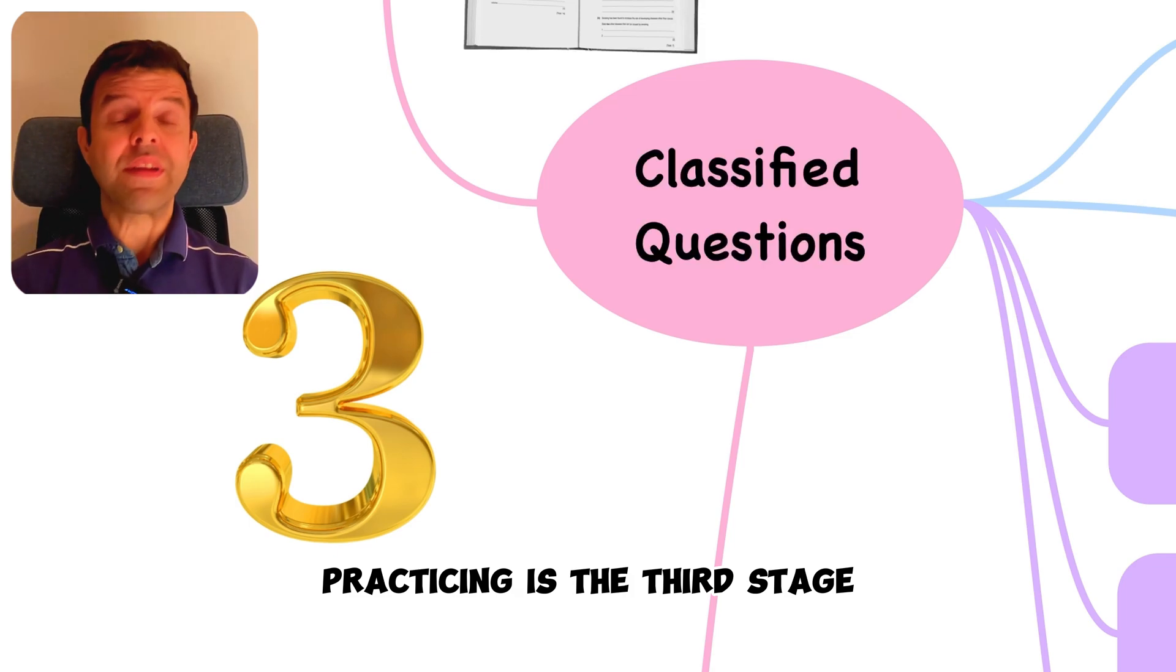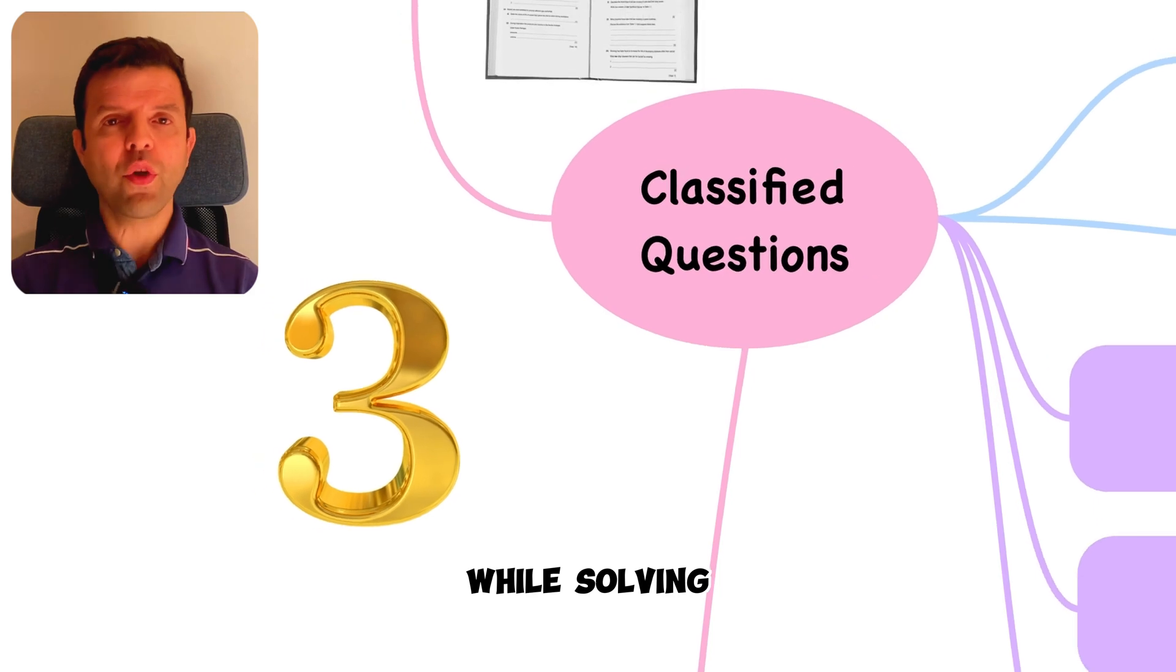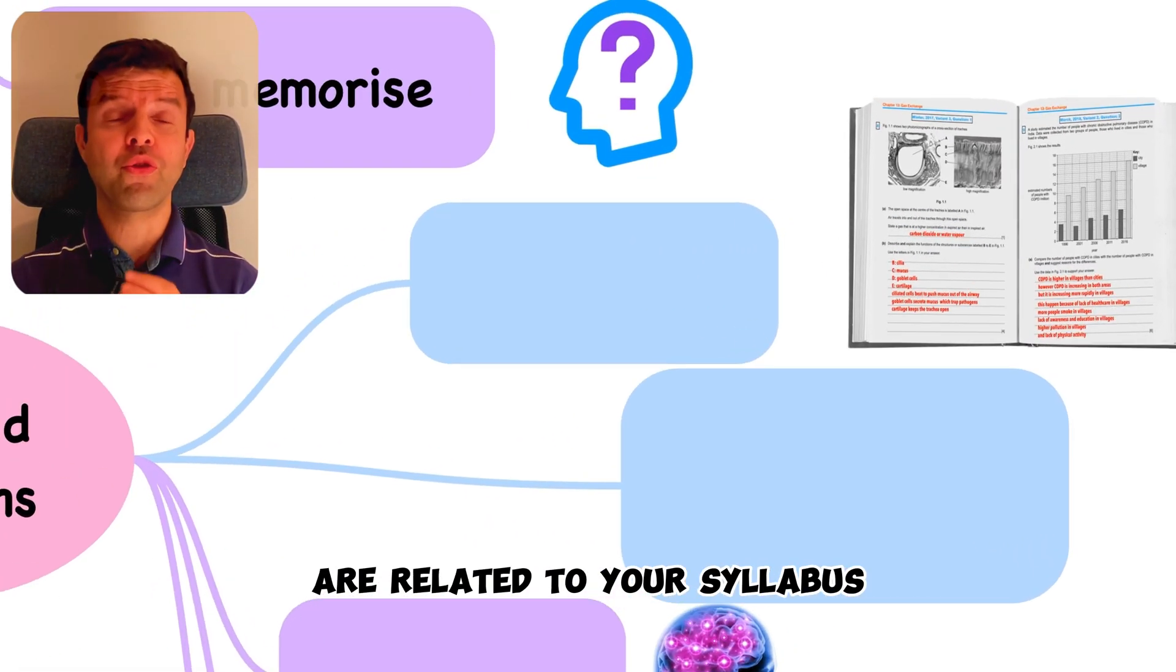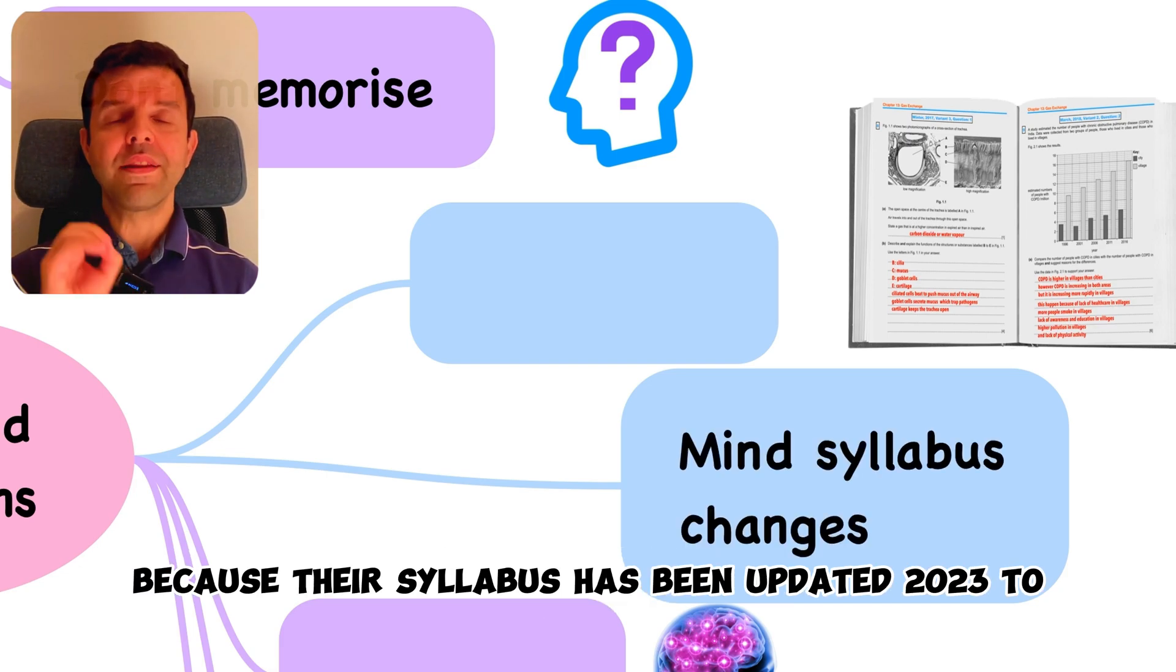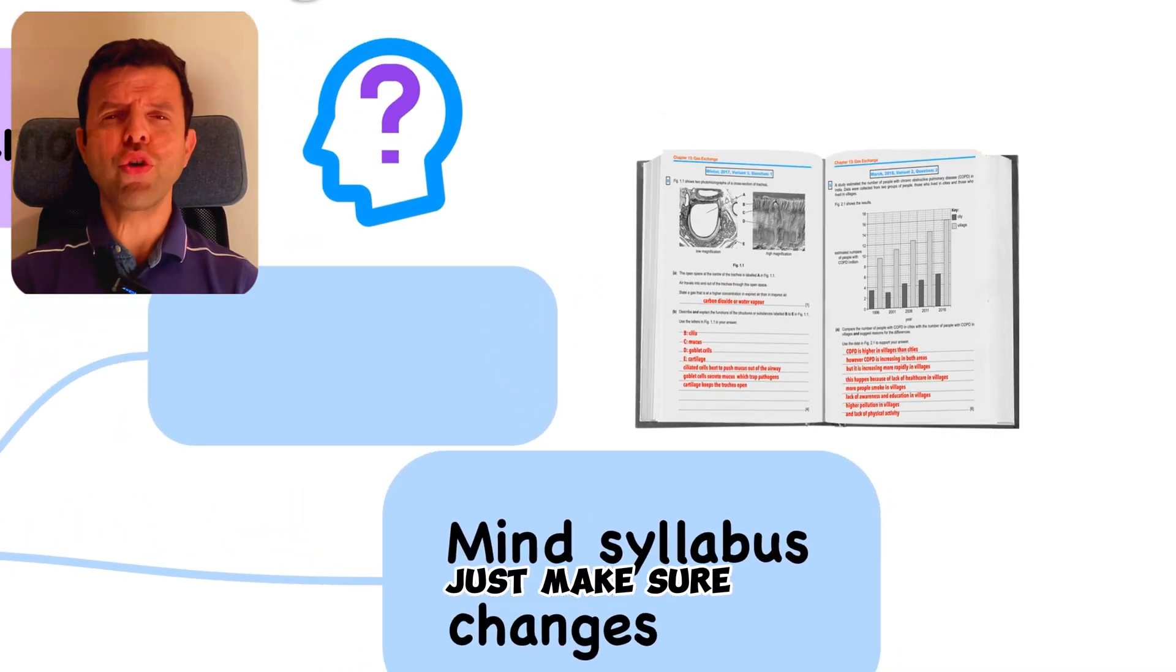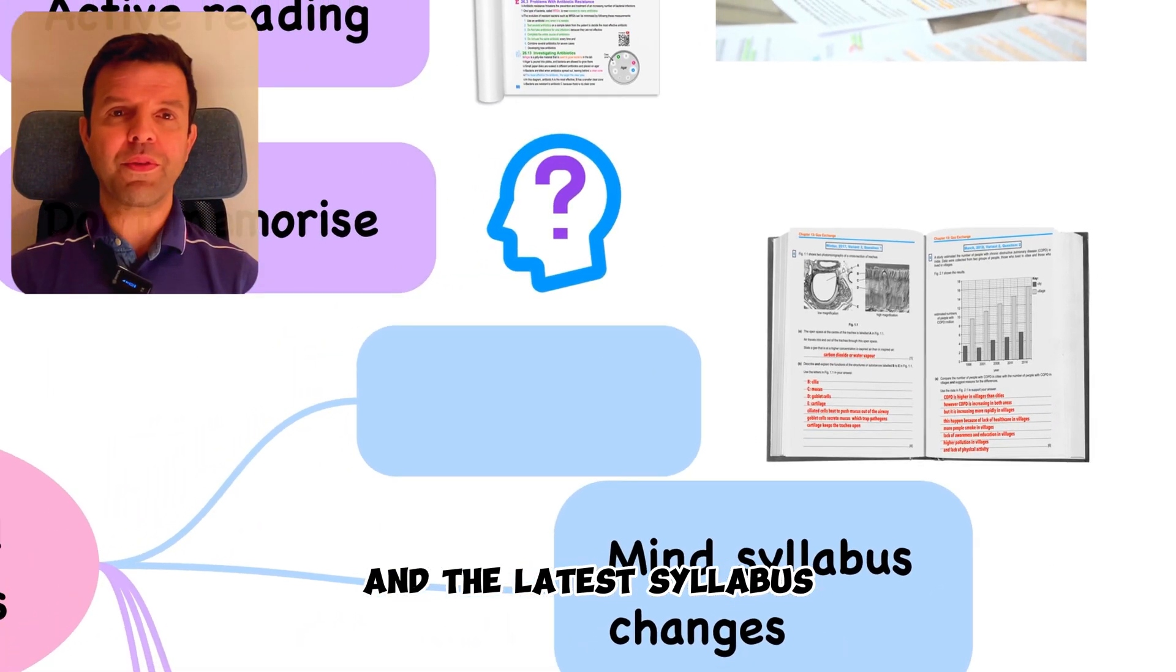Practicing is the third stage. This is the most important part of the learning process. While solving, just make sure you're solving questions that are related to your syllabus. This would be very important for Cambridge students because their syllabus has been updated in 2023. Just make sure you're solving questions that are related to your exam board and the latest syllabus.